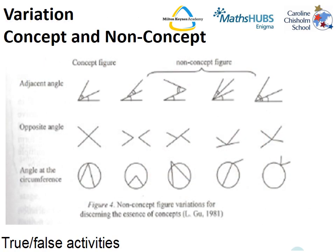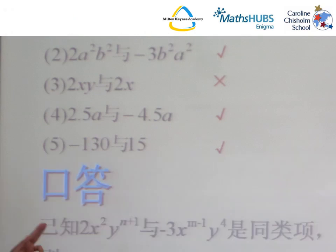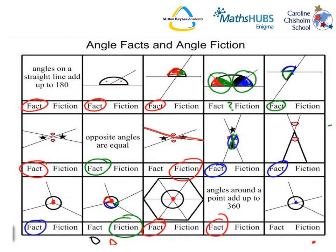Concept and non-concept is probably the easiest to plan for, but with the biggest impact on student understanding. It is about highlighting what the concept is against a background of what it is not. These can be done in true or false activities — often in Shanghai textbooks they will include true or false questions. This one here is on like terms, and here's one I prepared earlier on angle facts.